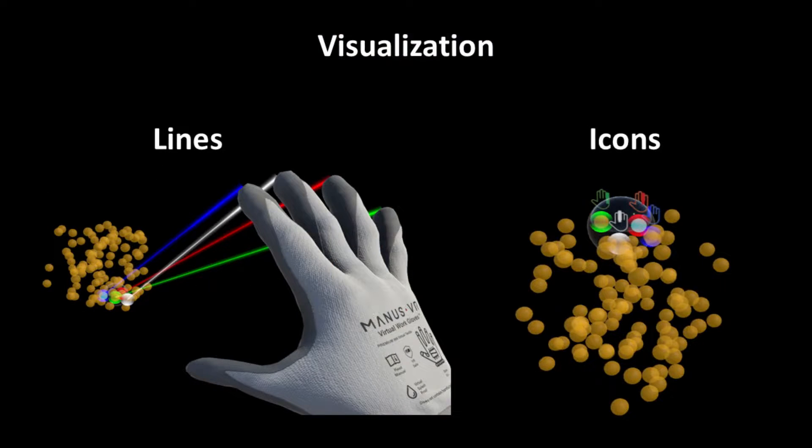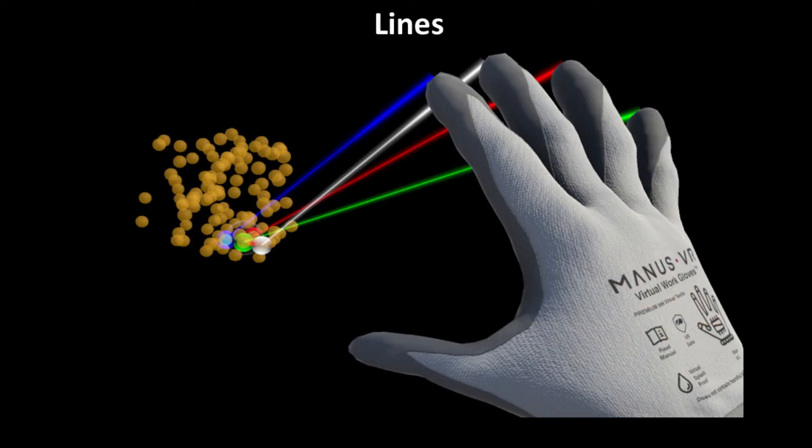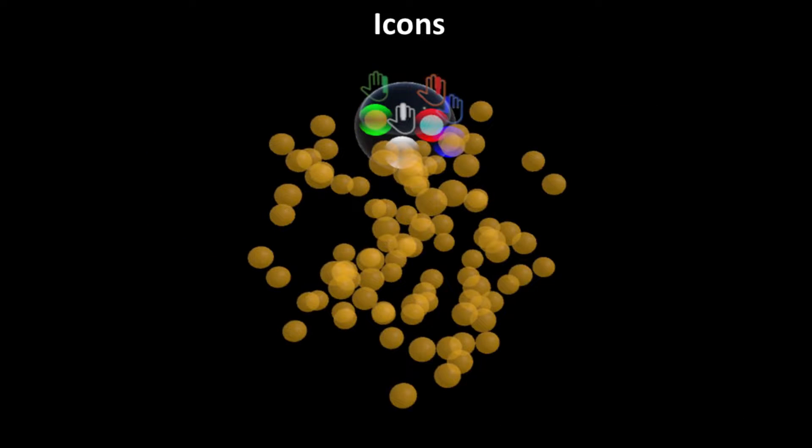We explore two visualizations to reveal the mapping between targets and fingers to users: colored lines and colored icons. Colored lines start from the fingertips and end on the targets. Colored icons are positioned above the corresponding targets and display a hand image with a corresponding finger filled with the corresponding color.